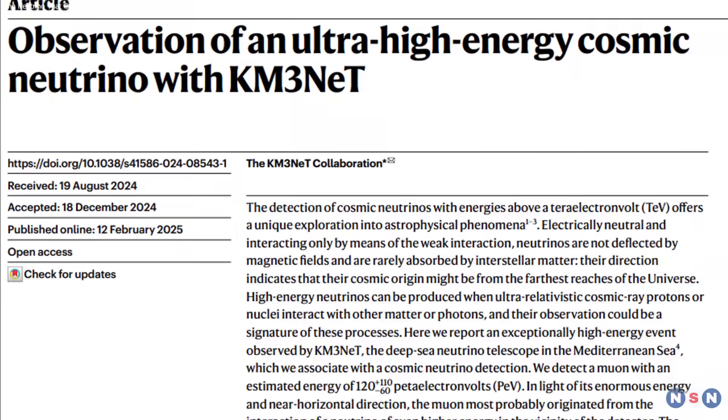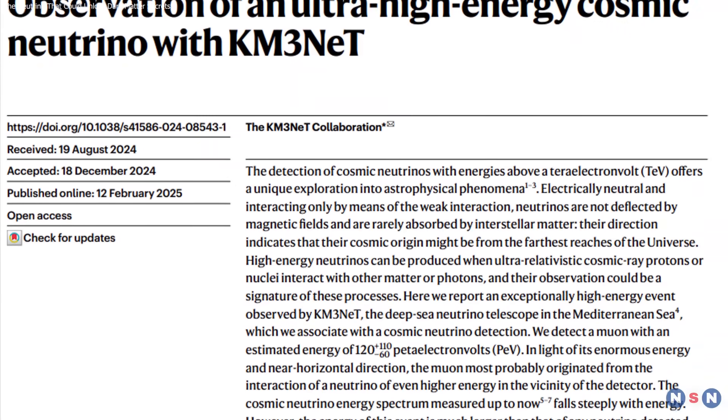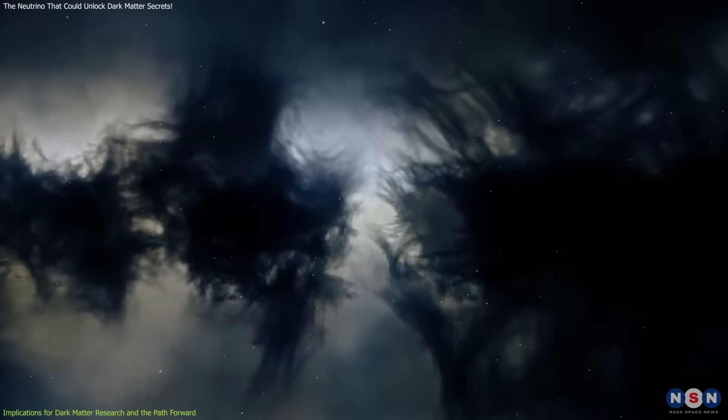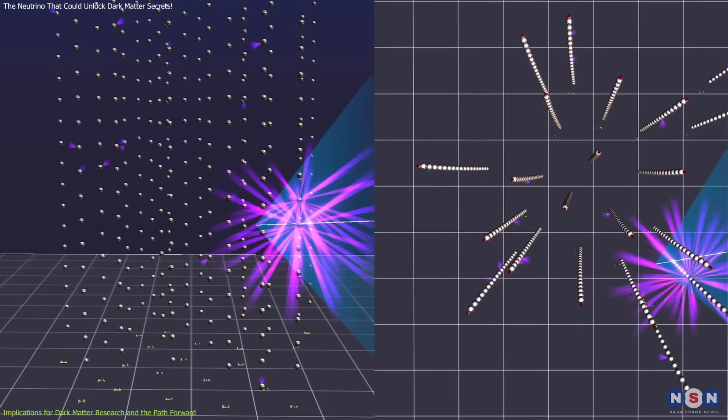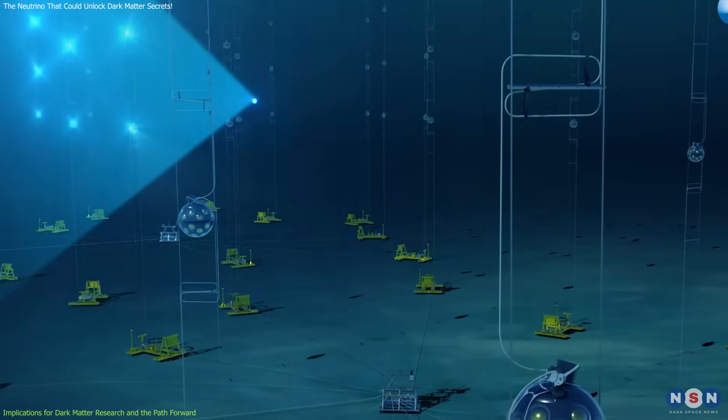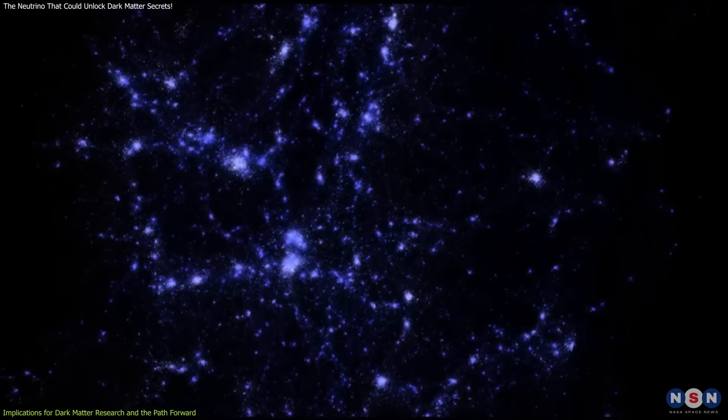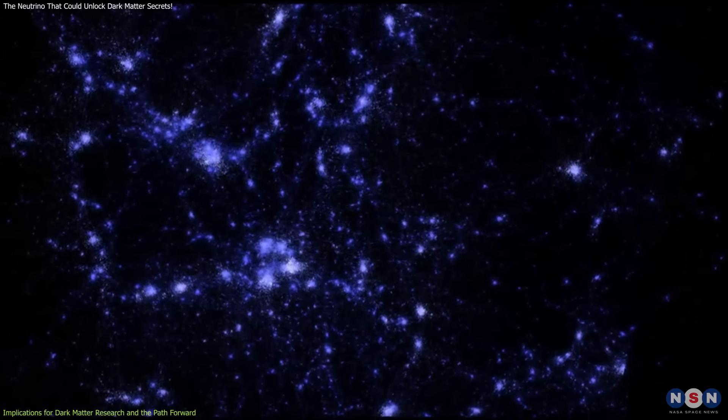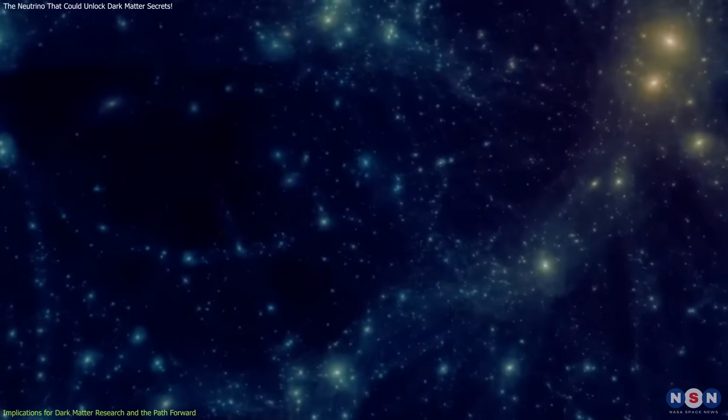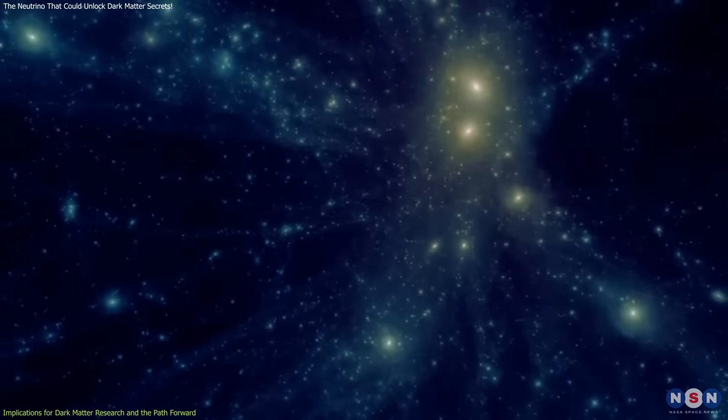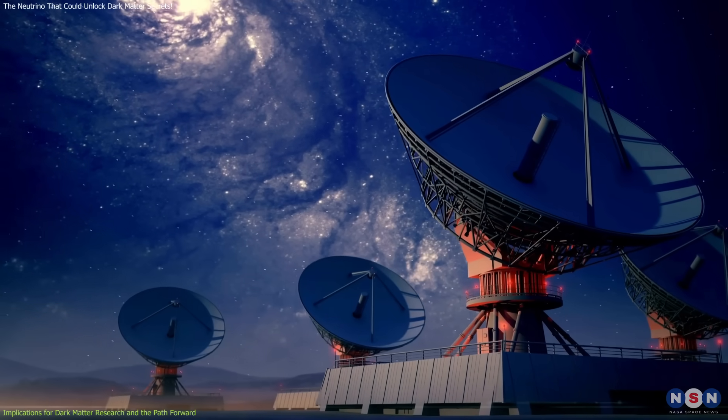The discovery of KM3-230213A could be a game-changer in dark matter research. If this neutrino is linked to dark matter, it could offer a new way to detect dark matter indirectly, revolutionizing a field that's struggled with direct detection. Dark matter is believed to account for roughly 27% of the universe's total mass, but it doesn't emit, absorb, or reflect light, making it invisible to traditional telescopes.